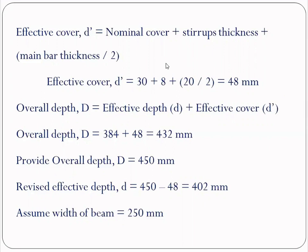With overall depth assumed as 450mm, the revised effective depth is calculated from effective cover and overall depth, giving 402mm. Width of the beam is normally taken as the wall thickness; here we assume slightly greater, taking width as 250mm. Summary of Step 1: effective length = 5 meters, overall depth = 450mm, effective depth = 402mm, assumed width = 250mm.